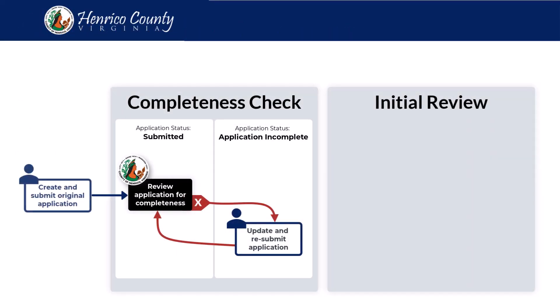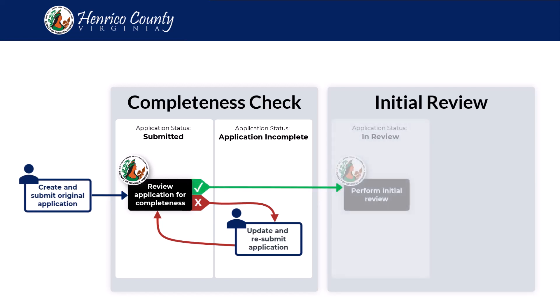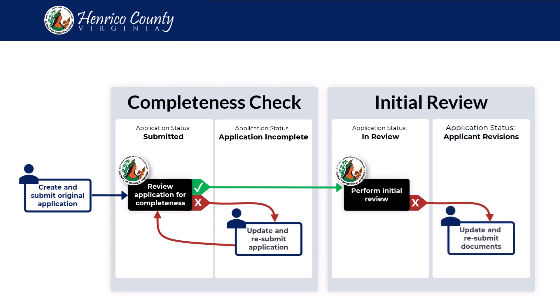Once your application is determined to be complete, the next step is the county will review the documents you submitted with your application. If your documents require revisions or if additional documents are required, the status of your application will change to Applicant Revisions, indicating that corrections are required. The Henrico Planning Department will also contact applicants outside of the system to provide feedback as part of the initial review process.